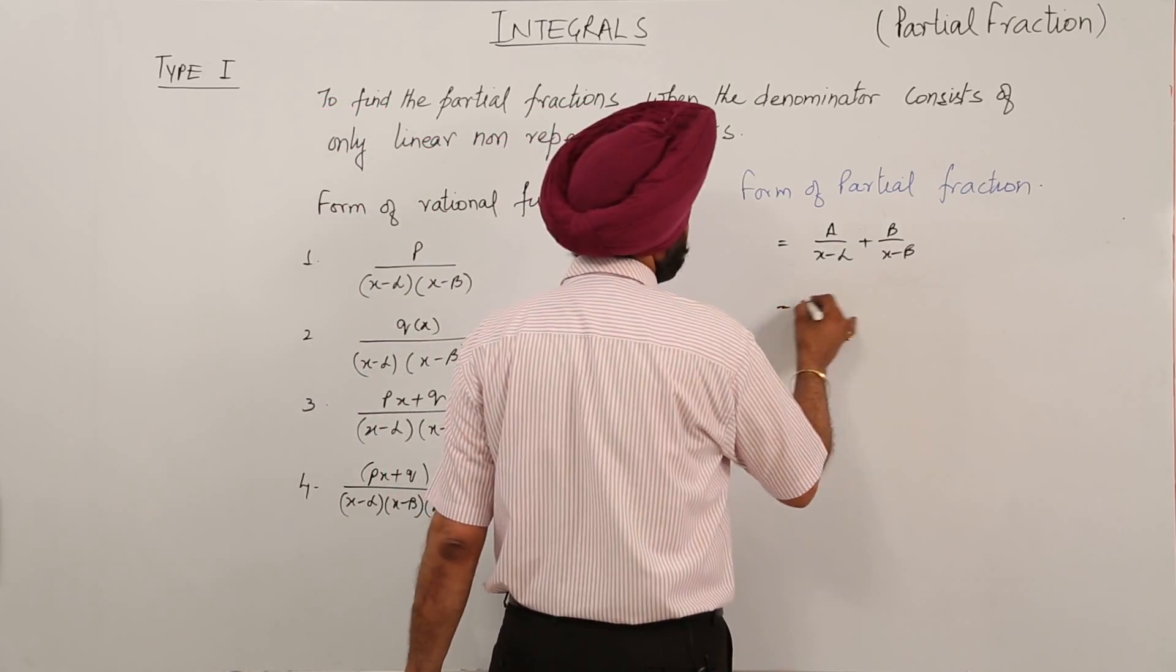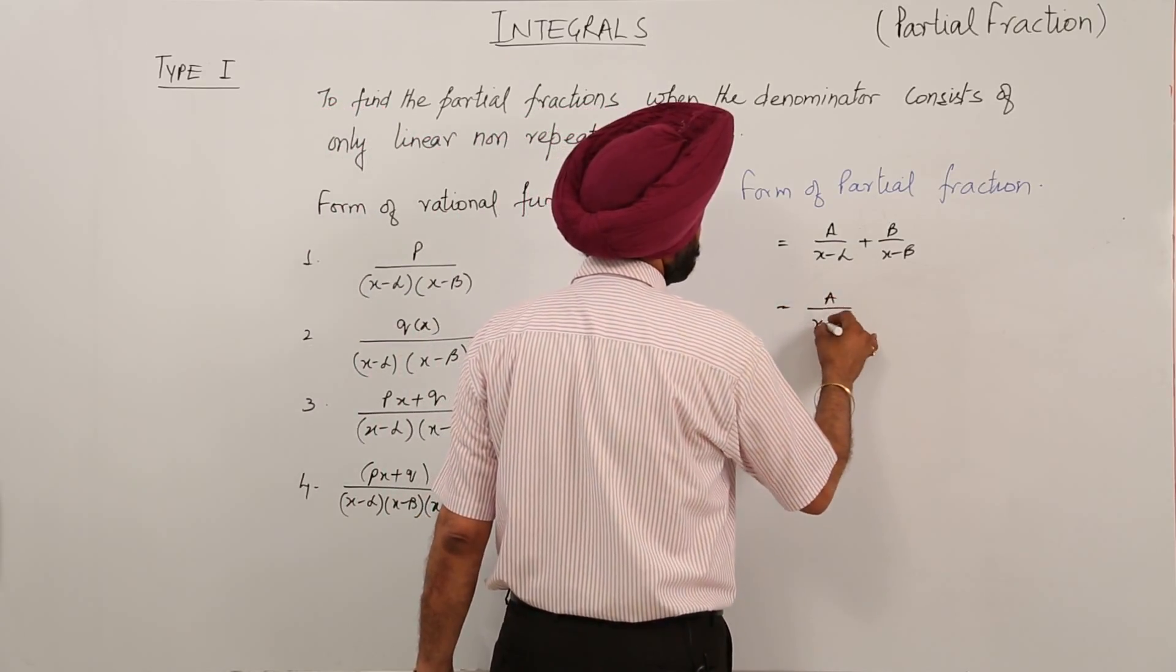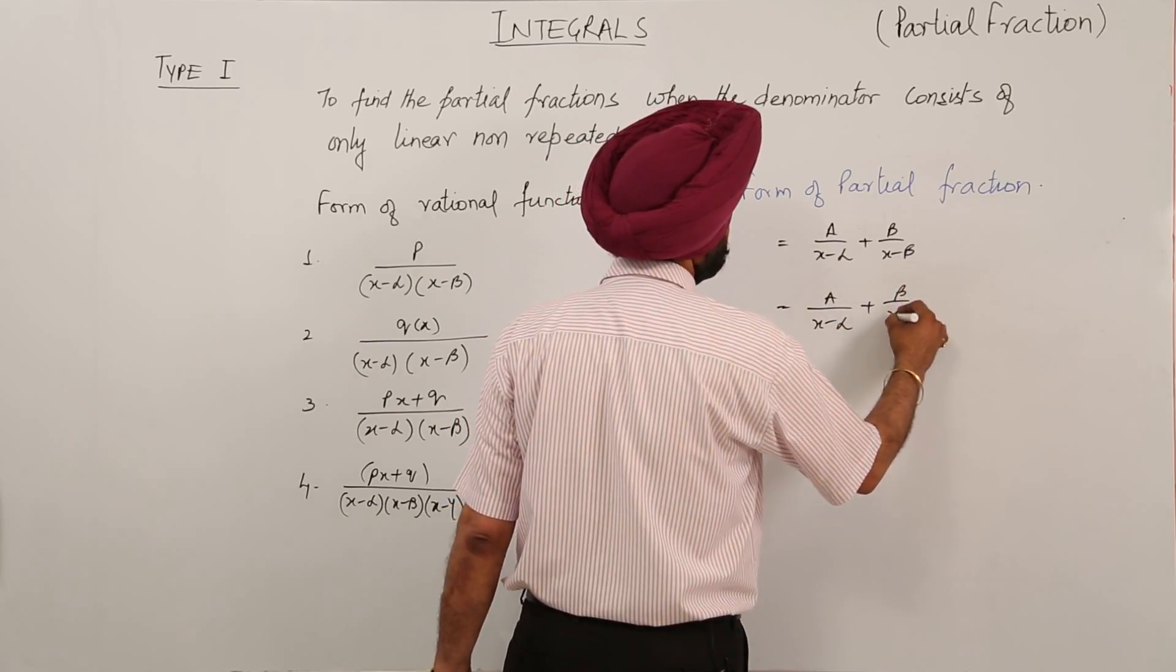This second part can be written as A upon x minus alpha plus B upon x minus beta.